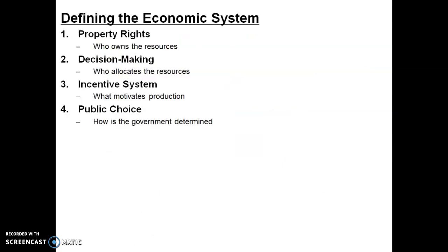There are hundreds of institutions, but we can focus on four big ones. First, property rights — who owns the resources. Second, decision making — who allocates the resources. Third, the incentive system — what motivates production. Fourth, the public choice system — how the government is determined. These four institutions help us distinguish countries like North Korea from the US.